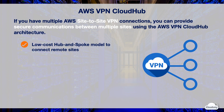It operates on a simple and low-cost hub-and-spoke model, which you can use with or without a VPC. It's suited if you have multiple branch offices and existing internet connections and would like to implement a convenient and low-cost hub-and-spoke model for primary or backup connectivity between these remote sites.